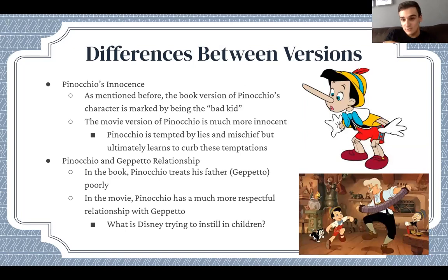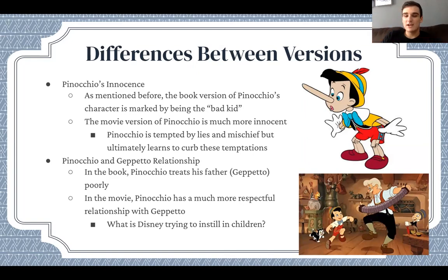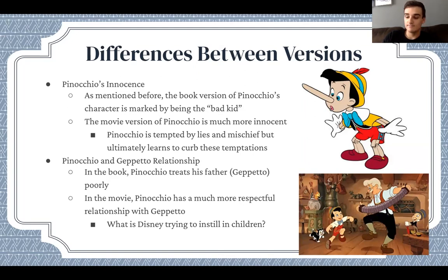Moving on to the differences between versions. Pinocchio is innocent in the Disney film. As mentioned before, the book version of Pinocchio's character is marked by being the bad kid, the naughty one. But the movie version of Pinocchio is much more innocent, and the ways he ends up getting in trouble are much more by accident rather than intentional. Pinocchio is still tempted by lies and mischief but ultimately learns to curb these temptations.